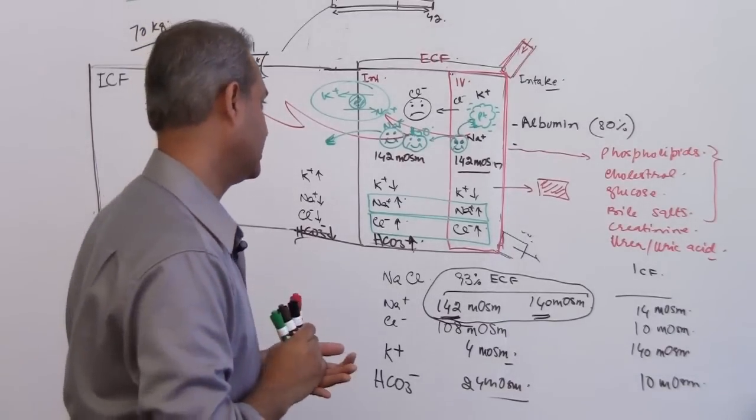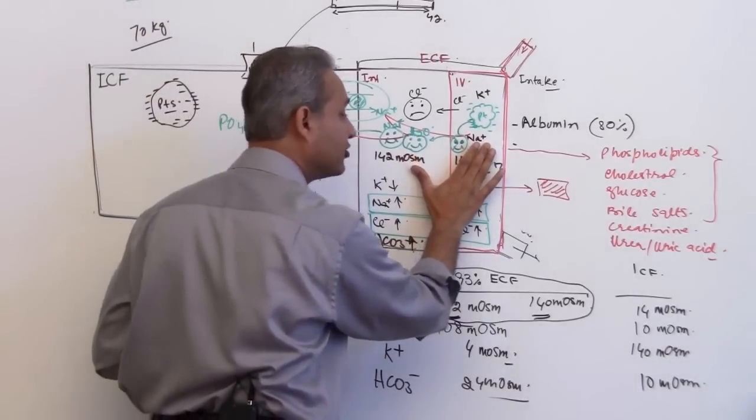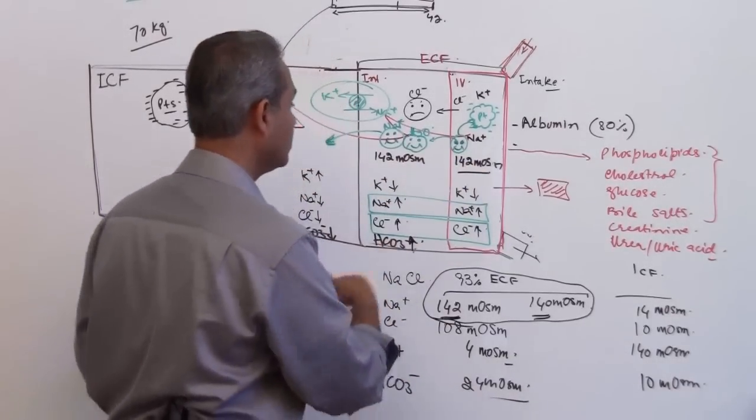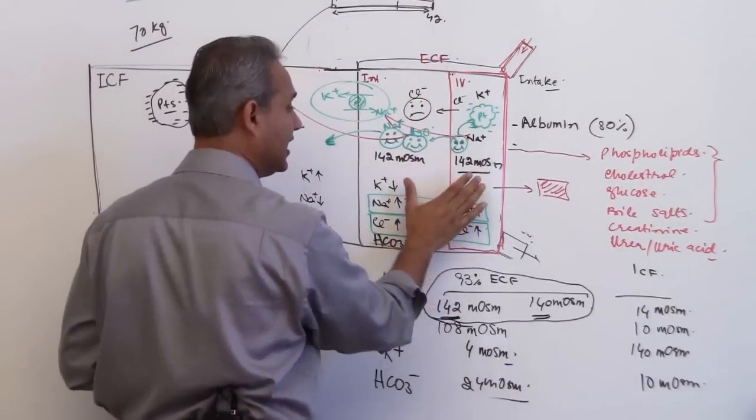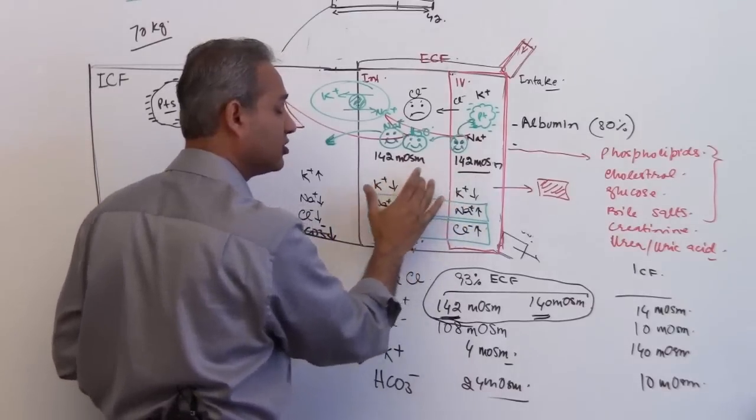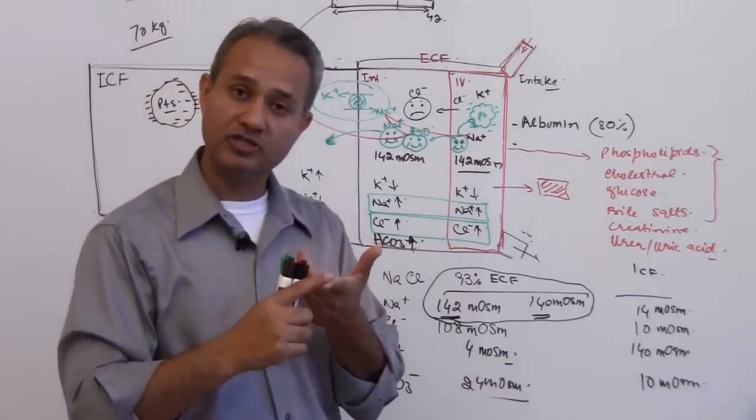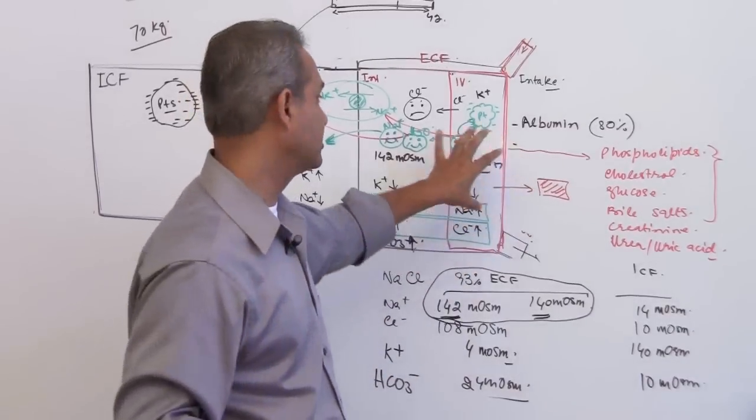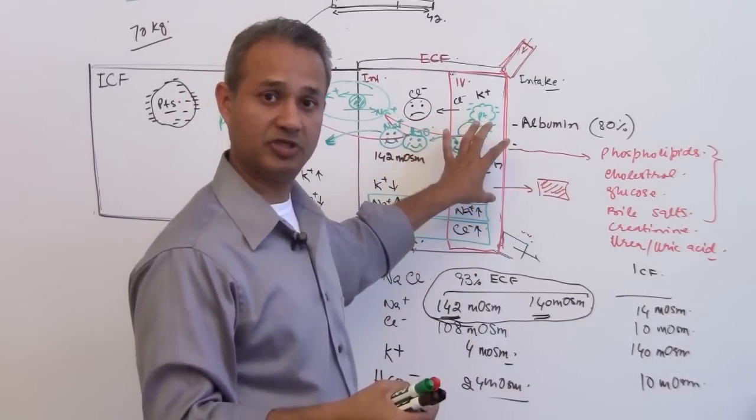So we will talk more about that at a later time, but the driver - the driver, I am saying it again and again, do not forget this - the driver to keep the fluid in balance between the intravascular and interstitial are hydrostatic pressure drivers and the oncotic factors. Anything which changes them would cause abnormality of distribution here.